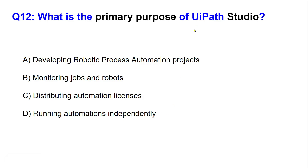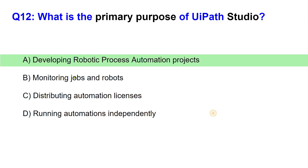Options: A) Developing robotic process automation projects, B) Monitoring jobs and robots, C) Distributing automation licenses, D) Running automations independently. I'll give you some time — think and comment your answer. The answer is A: Developing robotic process automation projects. That is the primary purpose of Studio.